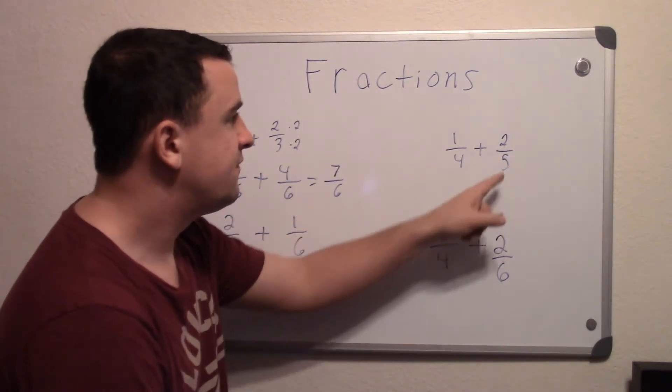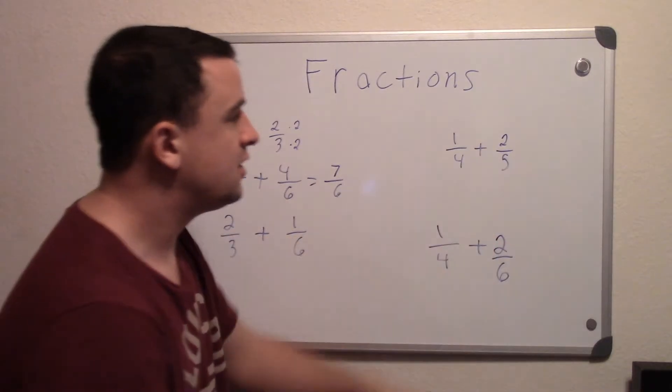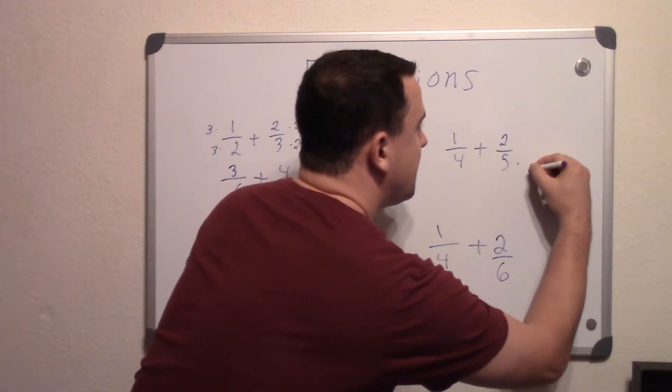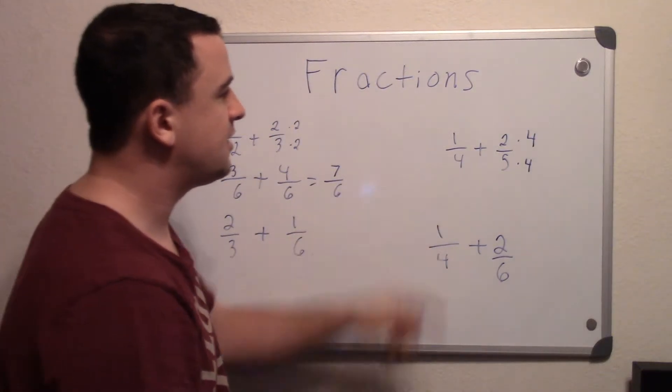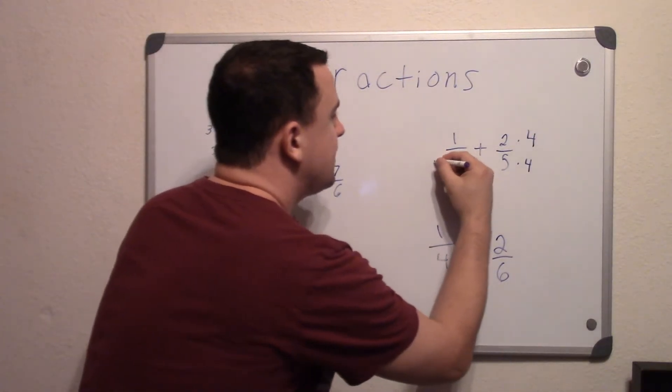So we know our bottom common denominator is going to be 20. So how do we get that? This one, 5 times 4 is 20, so I have to multiply the bottom by 4 and the top by 4. And this one's the opposite, I have to multiply by 5, so I do the same to the top and bottom.